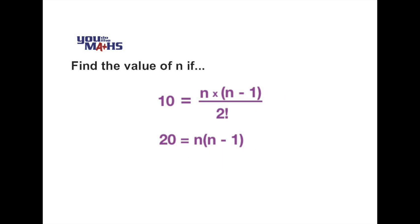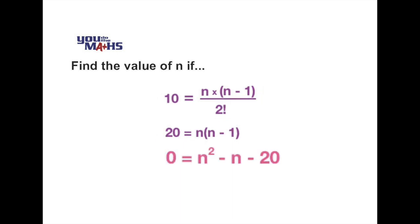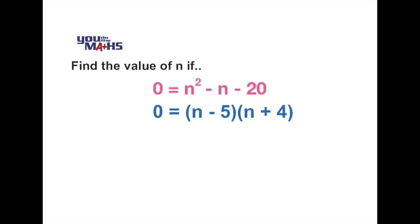The right hand side is still n brackets n minus 1, and at this point it's wise to notice that that's going to form a quadratic equation. And it's easiest to solve quadratic equations when it's expressed equal to 0. We can then do a factorization and we're left with n minus 5 in one bracket and n plus 4 in the other.